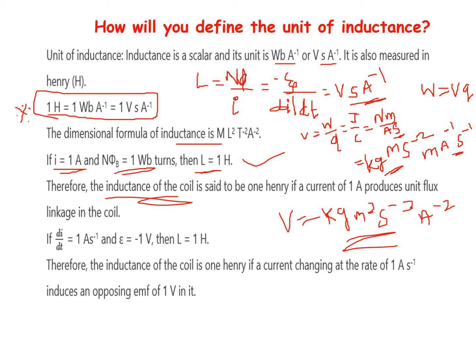The inductance of a coil is said to be 1 henry if a current of 1 ampere produces unit flux linkage in the coil. This could be asked as a two-mark question. If di by dt is equal to 1 ampere per second and epsilon is equal to minus 1 volt, then L is equal to 1 henry.